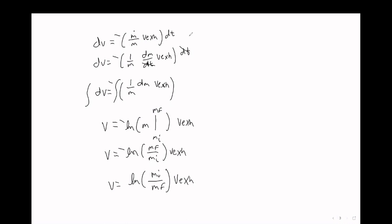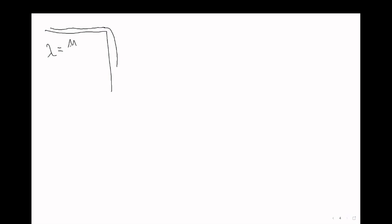So that's a quick example for how you might treat systems that have variable masses. Now let's do another example. In this example we're going to look at a table: you have some length of rope on the table and there's some length of rope that's falling off the table, and we want to know how the system will behave. The linear density of the rope is lambda, so the total mass divided by the length equals lambda.